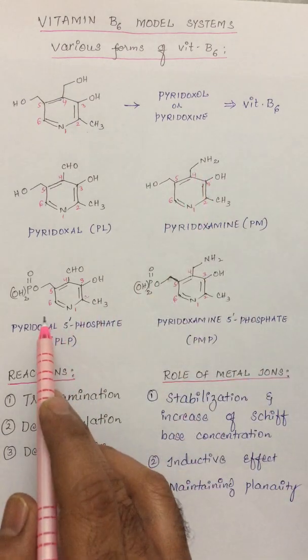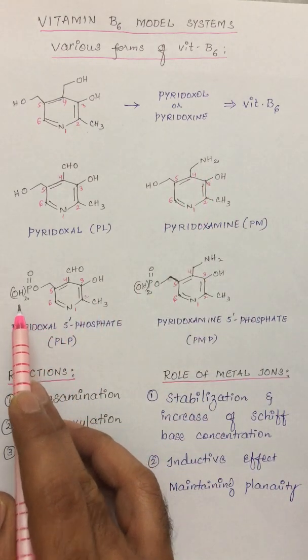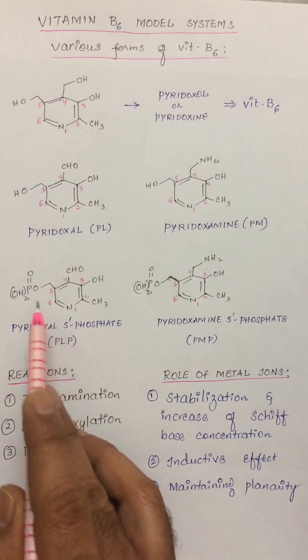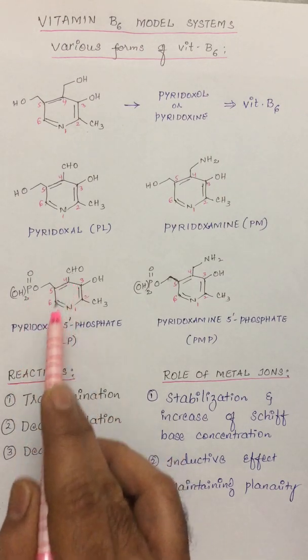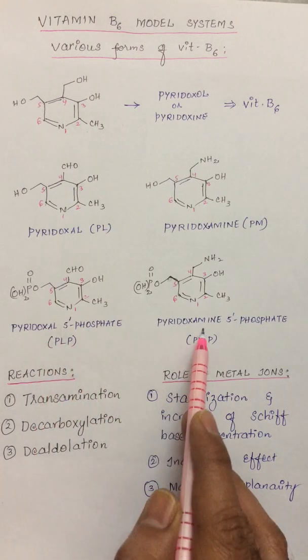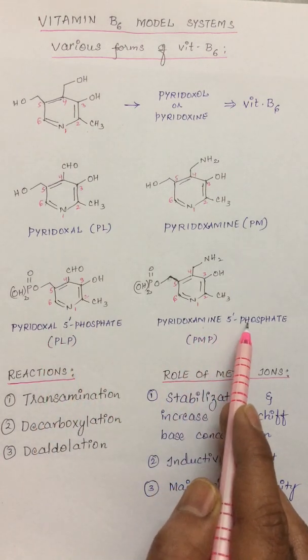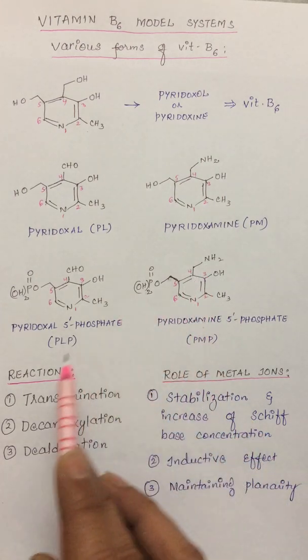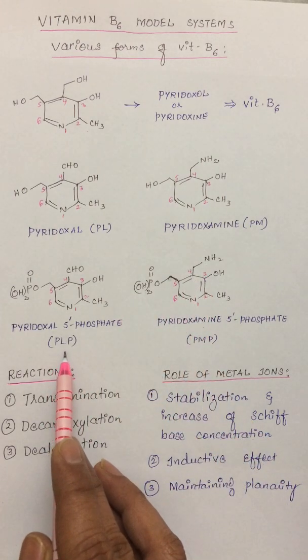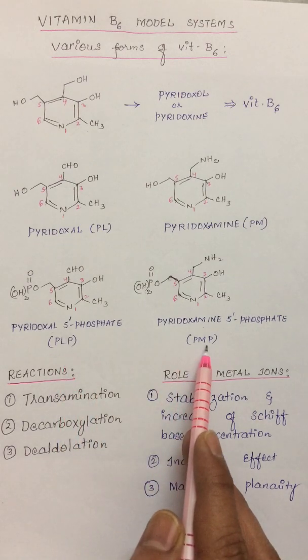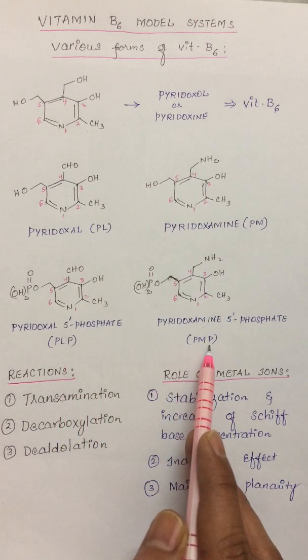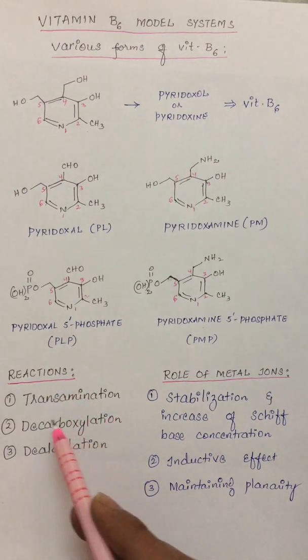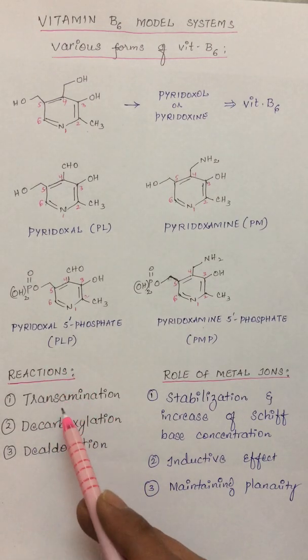Also, when a phosphate group is attached, the two other forms are simultaneously called pyridoxal 5 prime phosphate when an aldehyde group is present and pyridoxamine 5 prime phosphate with an amine substitution. These are simultaneously abbreviated as PLP and PMP.